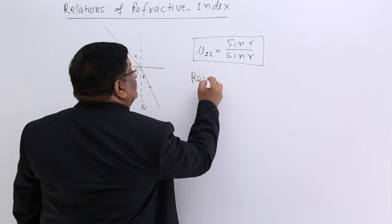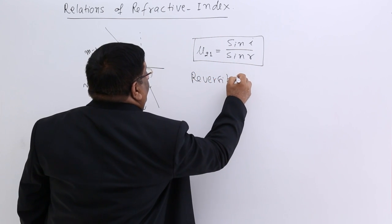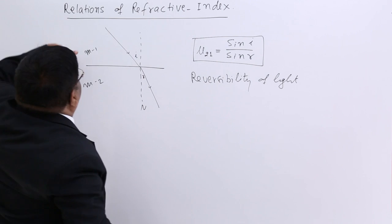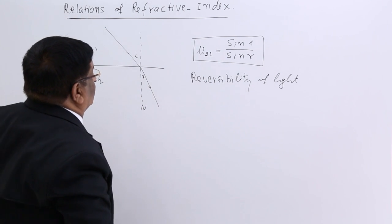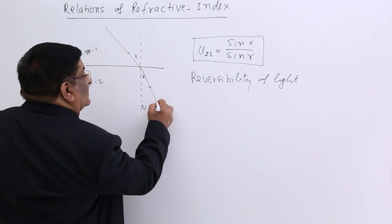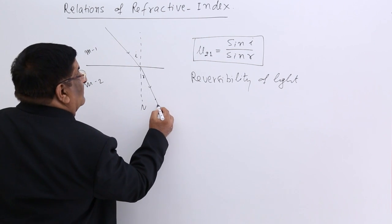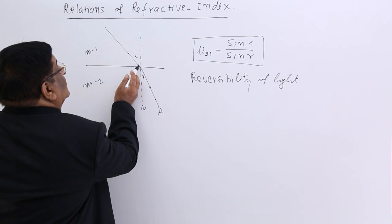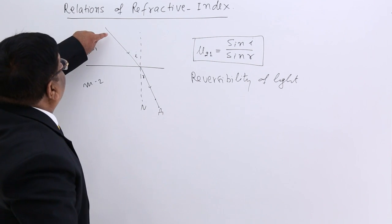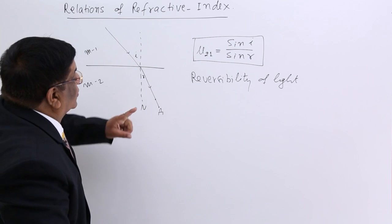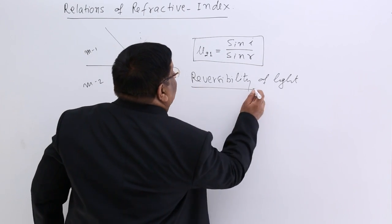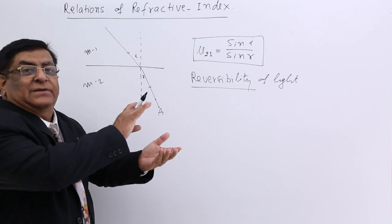There is a rule known as reversibility of light. If we have a source here, the light follows this path. And if we have a source at the other end and take this path, the light will go only in this direction — because when it was coming from this direction it followed this path, so when going in this direction it will follow this path. This is known as reversibility: we can reverse the path and light will follow it.